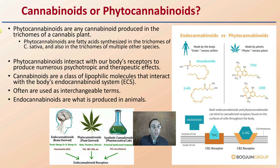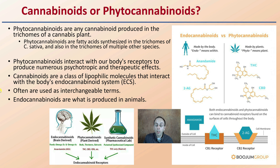What's the correct term to use? Well, phytocannabinoids are any cannabinoid produced in the trichomes of the cannabis plant. Phytocannabinoids are fatty acids synthesized in the trichomes of cannabis sativa and also in the trichomes of multiple other species. Phytocannabinoids interact with our body's receptors to produce numerous therapeutic effects. Cannabinoids are a class of lipophilic molecules that interact with the body's endocannabinoid system, typically abbreviated ECS. However, these terms are often used interchangeably. Endocannabinoids are produced in animals — made by the body — because 'endo' means within. Phytocannabinoids are made by plants, through the photosynthetic process.